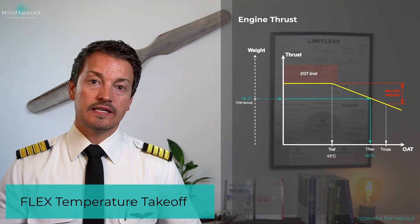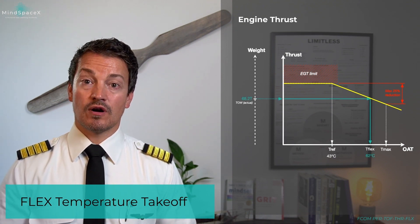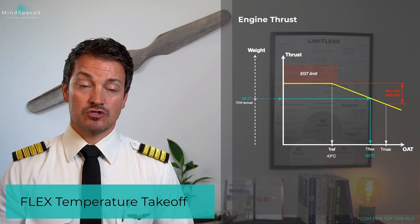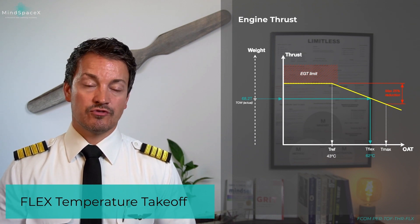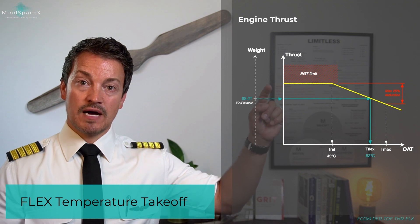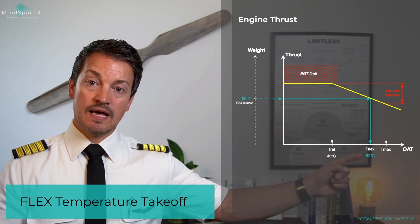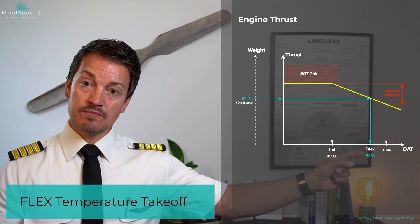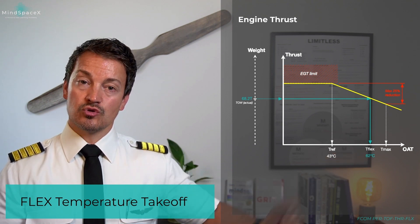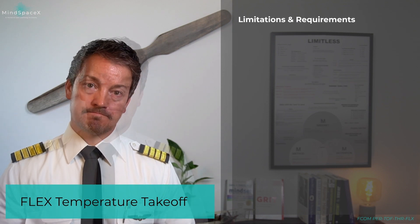So in this scenario, for an aircraft that's only 68.2 tons, I don't need full power. I can save all that power — and therefore save engine life — by having the engines give me only that power. I do that by programming the MCDU, and hence the FADEC, to a flexible temperature of 62 degrees.